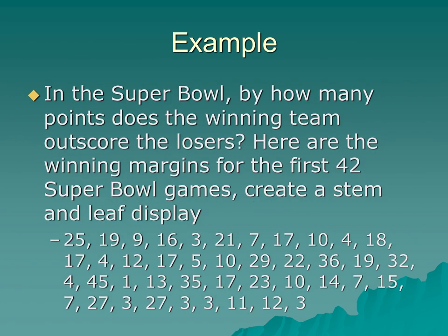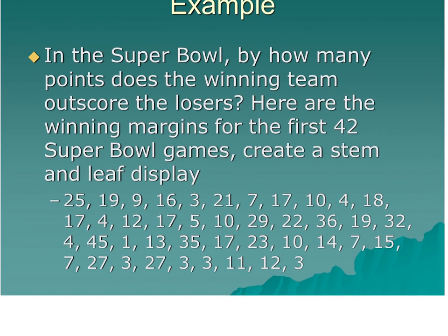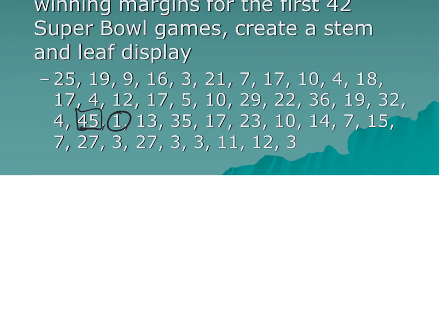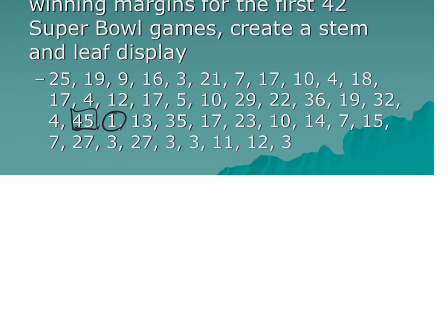So what does that look like? In the Super Bowl, by how many points does the winning team outscore the losers? Here are the winning margins for the first 42 Super Bowl games, create a stem and leaf display. So this first display is going to show us how to make one without having to worry about truncating. So we have values. Our lowest value is one, and I believe our highest value is 45.